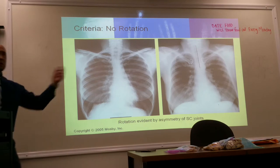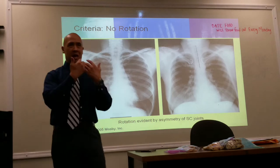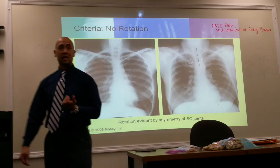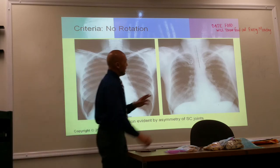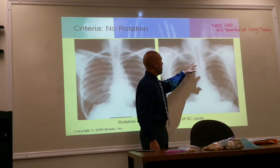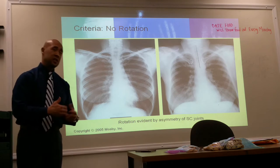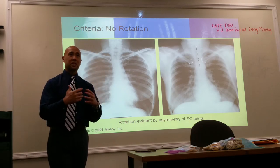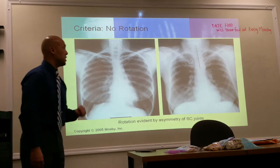To evaluate for rotation, we assess the distance from the mid-sagittal plane — the sternum — to the sternal end of the clavicle at each SC joint. A perfect example of no rotation shows equal distances on both sides. If one SC joint is more medial and the other is more lateral, there's some rotation, but this may be due to the patient's condition. As long as it's not grossly rotated, it is still acceptable.